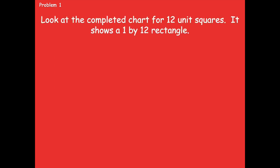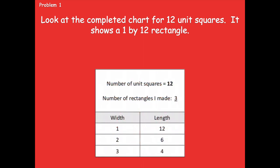Let's look at the completed chart for 12 unit squares. It shows a 1 by 12 rectangle. You're going to take 12 tiles and find different ways that you can make a rectangle with 12 tiles. There are three different ways: a 1 by 12, a 2 by 6, and a 3 by 4. This is just like our previous lesson where we were working with the area of 18. You start with 1 as your factor, then go to 2, 3, 4, and so on to find factors that give you a product of 12.